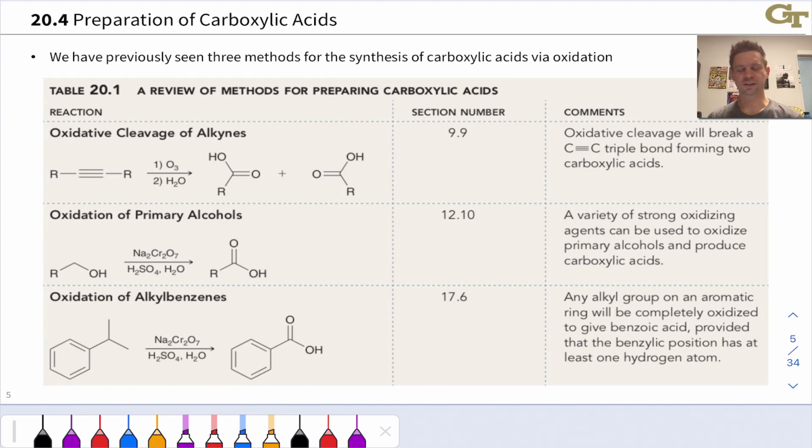This table, which is 20.1 in the Klein Third Edition textbook, reviews preparations of carboxylic acids, ways we can synthesize carboxylic acids from other starting materials.